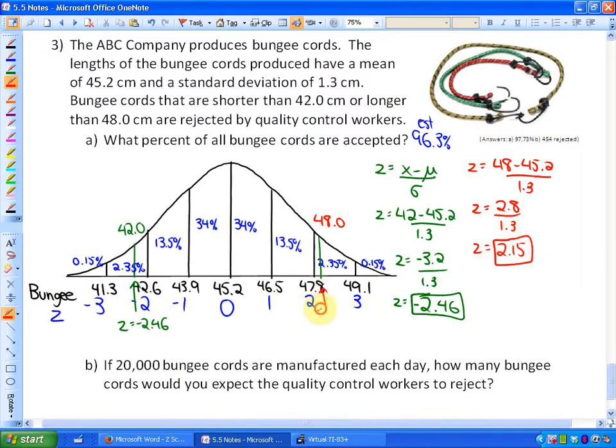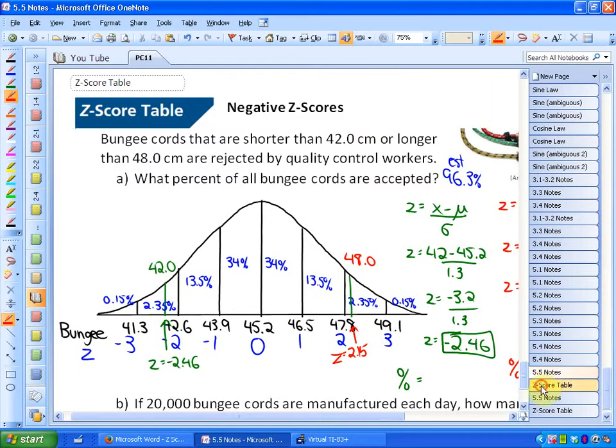So the idea here would be this: if I could find out the percent below 48 centimeters, as well as the percent below 42 centimeters, if I subtracted those two, I'd get the area in between. So what we're going to do is find out the percent related to each of these Z-scores, and that'll be the percent below. So this would be the percent and the percent. So let's look for, in our Z-score table, negative 2.46 and find out the percent.